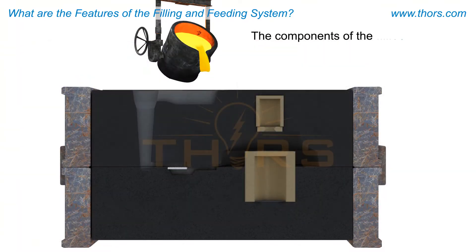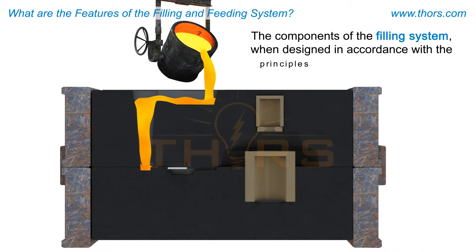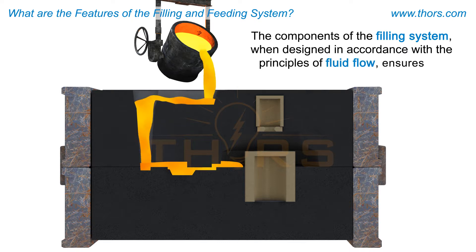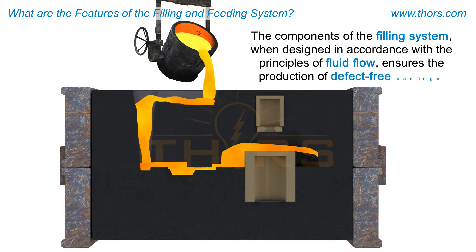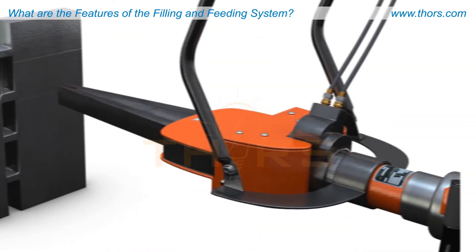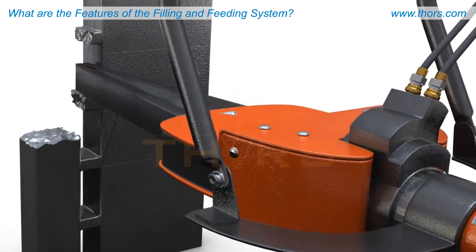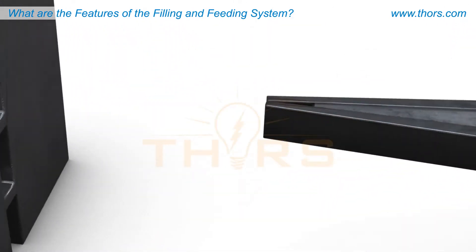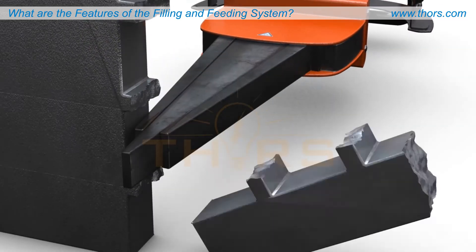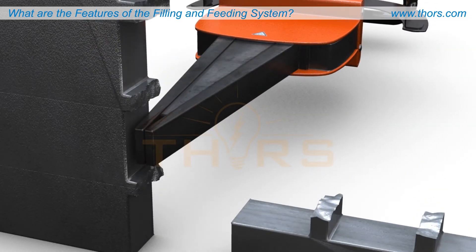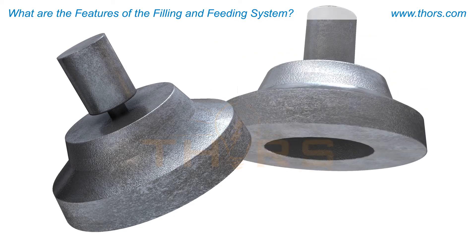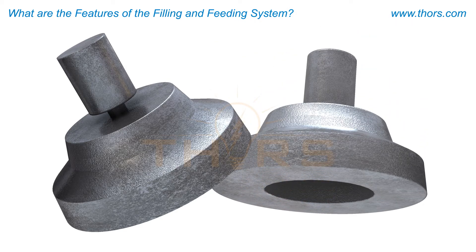The components of the filling system, when designed in accordance with the principles of fluid flow, ensures the production of defect-free castings. Care must be exercised in the use of filling and feeding systems, as they involve additional placement and removal costs. To improve yield, the metal used in the filling and feeding system should be minimized.